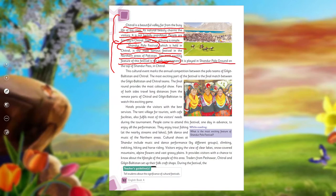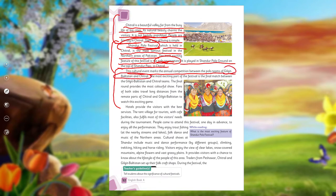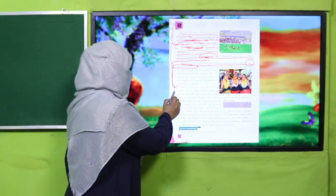The polo tournament is played at the Shandur Polo Ground. This cultural event marks the annual competition between polo teams. The final round is played between the teams from Gilgit-Baltistan and Chitral. People come from far to see this final match and they are very excited about it.